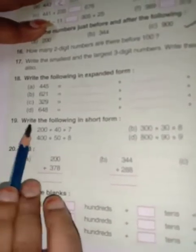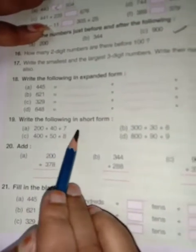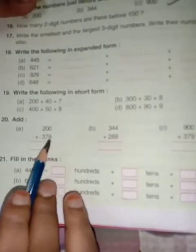Question number 19 is write the following in short form. Means given in expanded form, you have to write in short form. So 200 plus 40 plus 7, answer is 247. Question number 20 is add given. You have to add both the numbers.